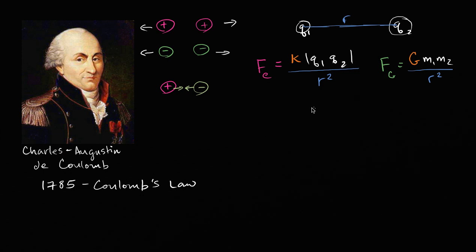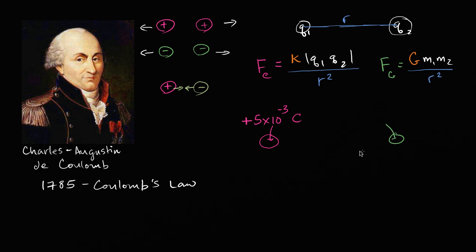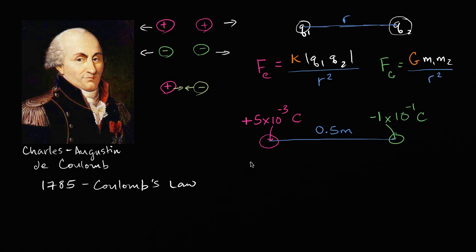Let's actually apply Coulomb's Law to make sure we feel comfortable with the mathematics. Say I have a charge Q1 with a positive charge of 5 times 10 to the negative 3 Coulombs, and another charge Q2 with a negative charge of negative 1 times 10 to the negative 1 Coulombs. The distance between the two is 0.5 meters.